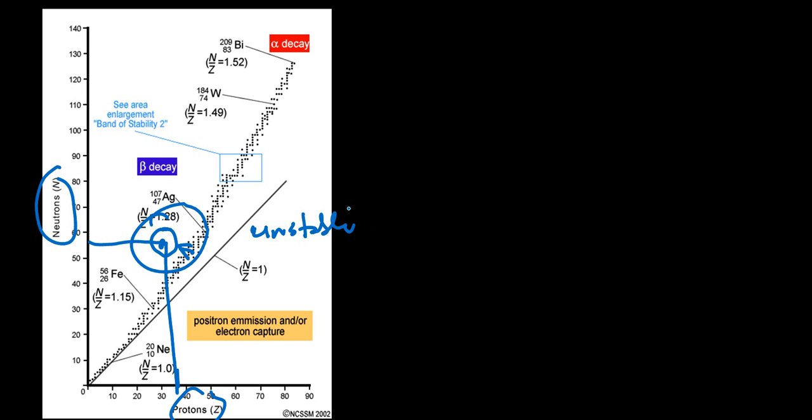On the other hand, if we count our neutrons and protons and that plot falls somewhere off the band of stability, this indicates that nucleus is unstable — radioactive. Depending on which side the plot falls off the band of stability — region A to the left, region B below and to the right, or region C at the top — the different areas outside the band of stability tell us what type of radioactive decay that nucleus will go through in its attempt to become stable.